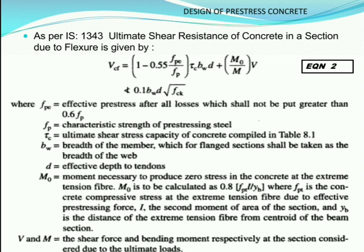As per IS code, the formula for ultimate shear resistance of concrete due to flexure is: Vcf = (1 − 0.55 × fpe/fp) × τc × bw × d + (M0/M) × V. While designing, this should not be less than 0.1 × bw × d × √fck. For analysis examples we use just the main equation, but in design we must also check the minimum value.